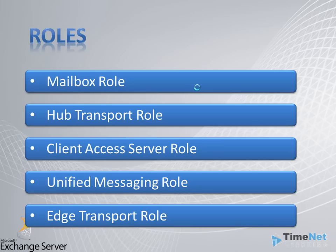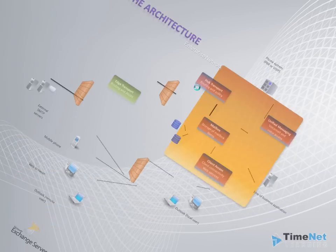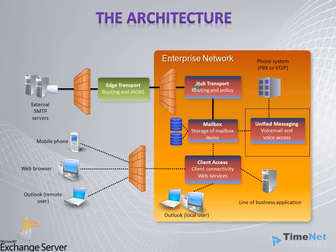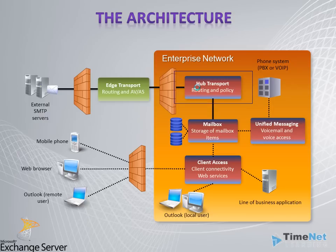Now we will have a look at a typical Exchange 2010 architecture with all these servers installed. In this diagram you can see all five roles acting their own parts to set up a complete Exchange 2010 environment. All users from inside and outside the network connect to the Client Access Server. The phone system connects to Exchange using the Unified Messaging role. The Mailbox role is connected to its storage space, the Hub Transport server carries its transport policies, and the Edge Transport server stands outside the environment protecting it from viruses and spam.